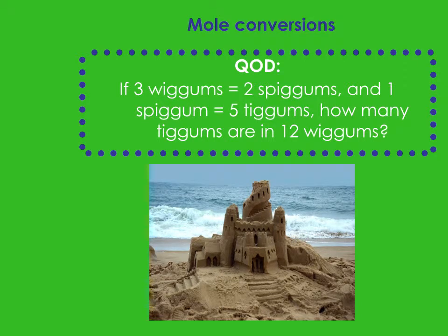Our question of the day is about mole conversions. Obviously these are made of numbers — there's no such thing as a Wiggum or a Spiggum or a Tiggum — and I want to figure out how to do multi-step recordings.